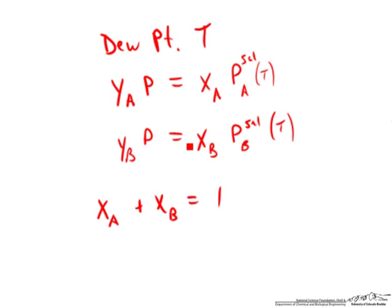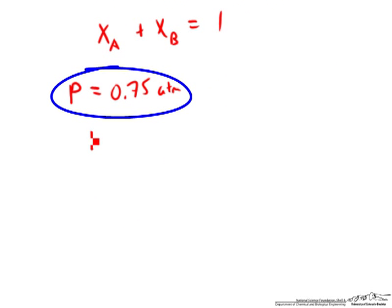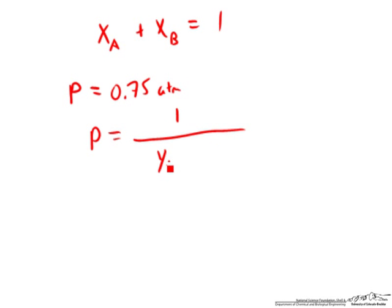If we solve these two equations for xA and xB, and rearrange the equation that we get by plugging those values into this equation, then what we get is that that pressure is equal to 1 over YA over PA sat plus YB over PB sat. And in this case, these again are functions of the dew point temperature.